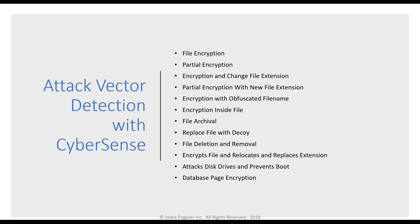The attack vectors CyberSense is focused on are all common attack vectors that exist today — typically around file encryption, database encryption, file deletion, file removal, and files that become corrupt. We can see files corrupted and changed to a zero-byte character file, encryption inside files, and encryption inside database pages. This covers all the common attack vectors that exist today.